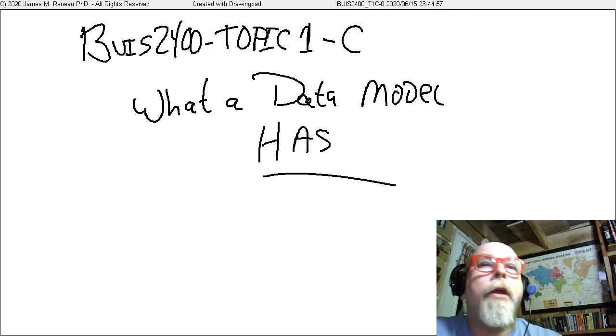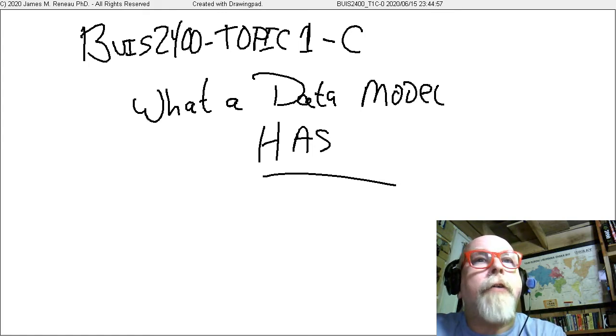This video is entitled What a Data Model Has, and it accompanies BUIS 2400, Topic 1, and is video C in this series. I'm Dr. Renaud, and I'll be taking you through this video presentation.